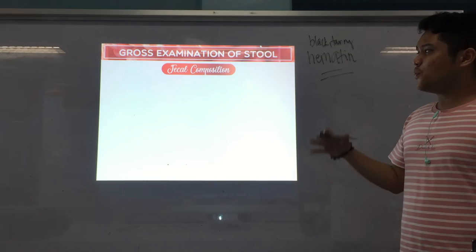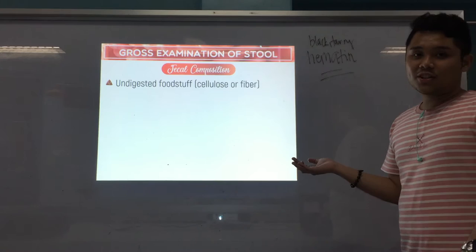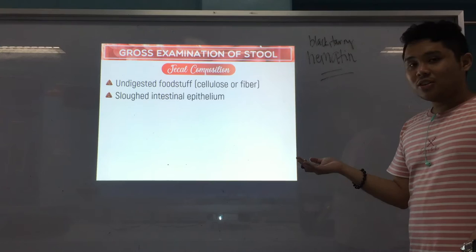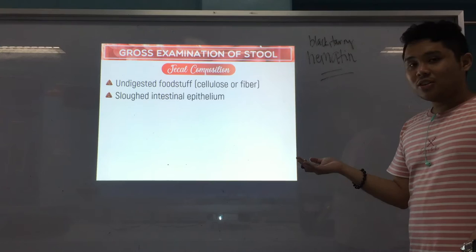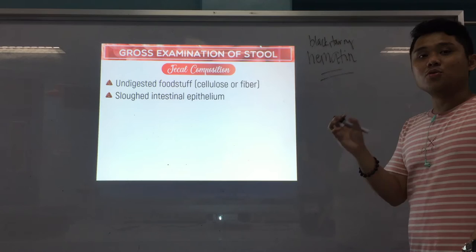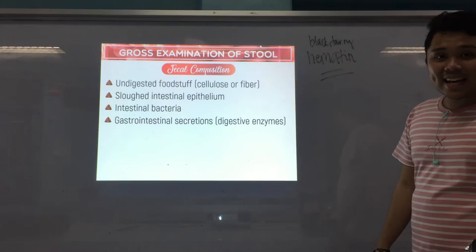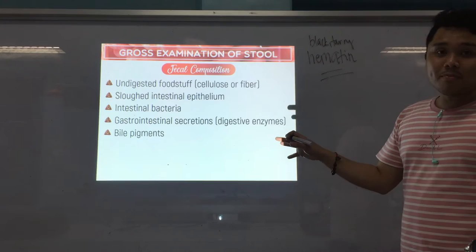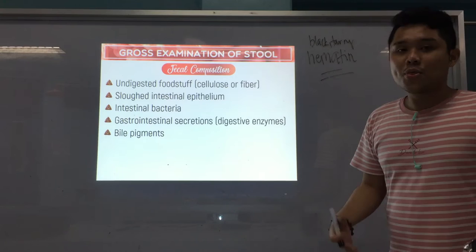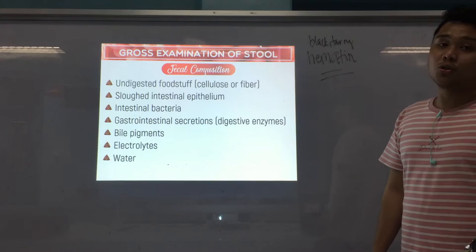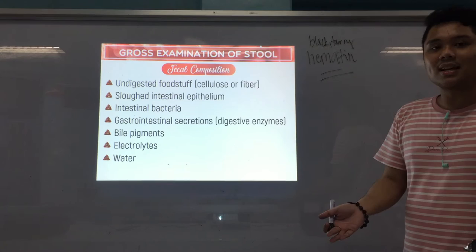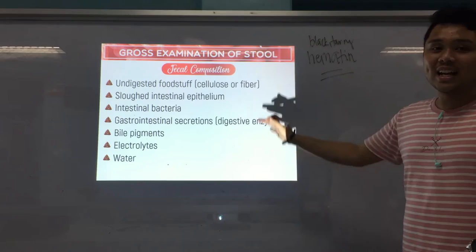Now we go on to the fecal composition. What is your stool composed of? Number one is undigested foodstuff — cellulose or fiber, because we don't have enzymes inside our body to digest those. You have sloughed intestinal epithelium — cells that have fallen off from the surface. You have intestinal bacteria, GI secretions and digestive enzymes, bile pigments from your liver, electrolytes, and of course, water.